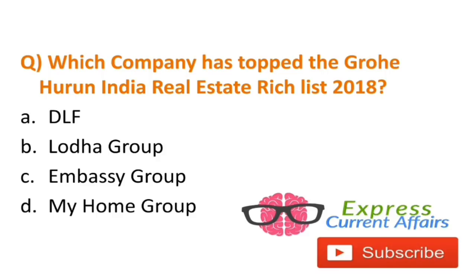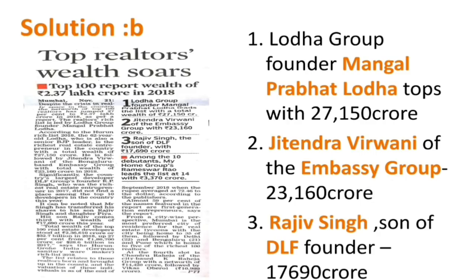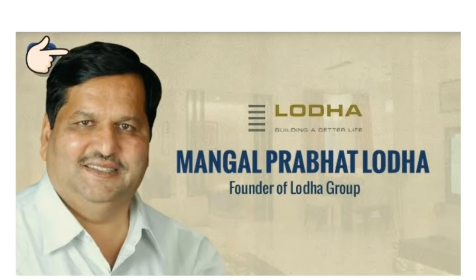Question: Which company topped the Grohe Hurun India Real Estate Rich List 2018 — DLF, Lodha Group, Embassy Group, or My Home Group? The answer is B — Lodha Group. The founder of Lodha Group, Mangal Prabhat Lodha, topped with almost 27,150 crore. Jithendra Virwani of Embassy Group stood second at 23,160 crore, and Rajiv Singh, son of DLF founder, stood third at 17,690 crore. Mangal Prabhat Lodha is an Indian politician belonging to the Bharatiya Janata Party, hailing from Maharashtra.